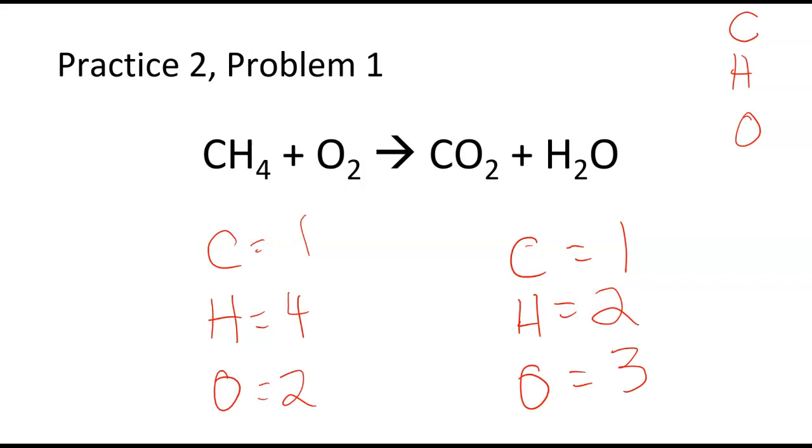My carbons are balanced, my hydrogens are not. I've got four on the left, two on the right, so I need to put a coefficient of two here. Two times two gives me four. That also is going to change my number of oxygens because now I've got two from the CO2 plus two from the H2Os for four oxygens. Four oxygens versus two, and I need to put a coefficient of two here to balance out my equation. So now I've got one carbon, four hydrogens, four oxygens on each side.